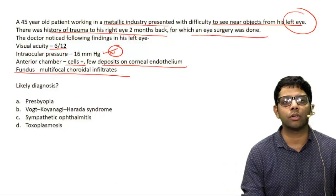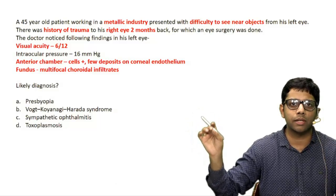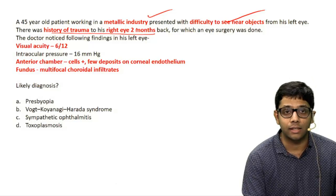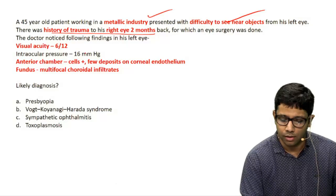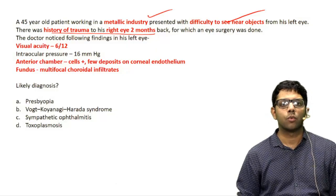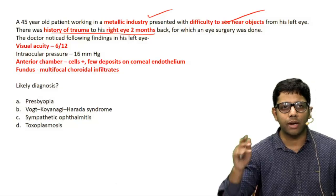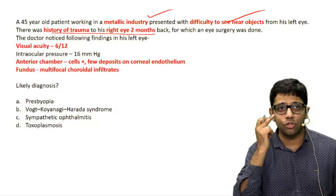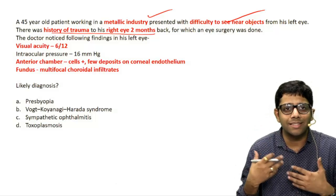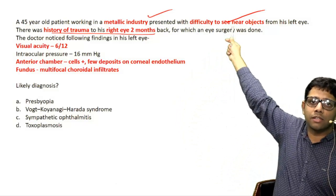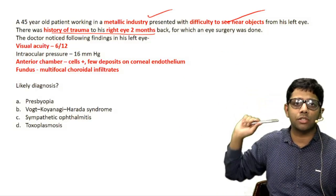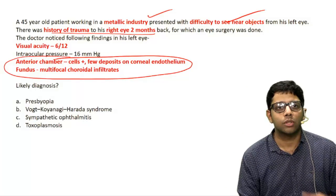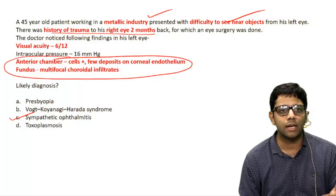The vital words important here are: metallic industry, difficulty in near vision, history of trauma to the right eye two months back, and reduced visual acuity. If the right eye has trauma involving the uveal tissue, the body desensitizes, and the other eye develops changes — difficulty in near vision, loss of accommodation, and uveitis. The other eye becomes the sympathizing eye.